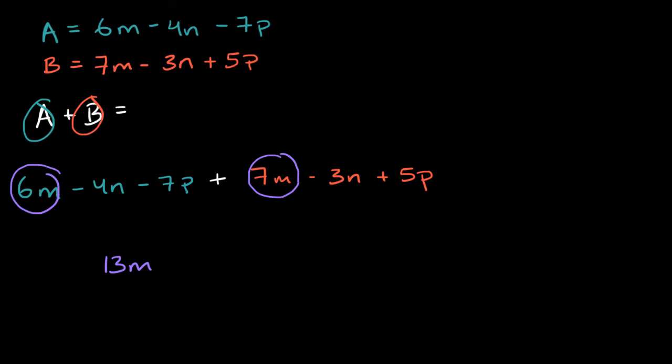And then next, I could think about adding, you might want to say 4N and 3N, but since we're subtracting 4N and we're subtracting 3N here, you could view it as negative 4N plus negative 3N, or you could say we're starting at negative 4N and then we're subtracting 3 more Ns. Well, negative 4 minus 3 is negative 7. So you're now going to have negative 7Ns, or you could say we're subtracting 7N.